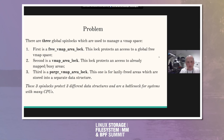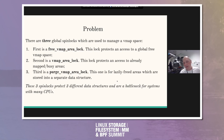First of all, the first one is the free_vmap_area lock. This lock protects access to the global free VMAP space when we allocate and when we deallocate. Then we have the vmap_area lock. That lock actually deals with bookkeeping data — what we call mapped data or busy areas. And the last one is the purge_vmap_area lock. This one is used when we access lazily freed areas, which is also a separate global data structure.